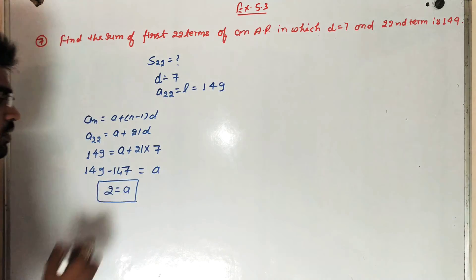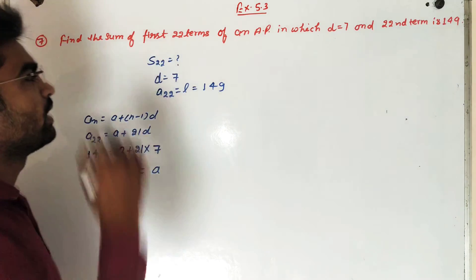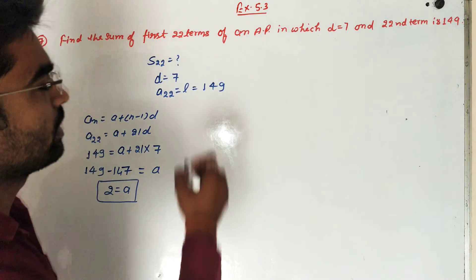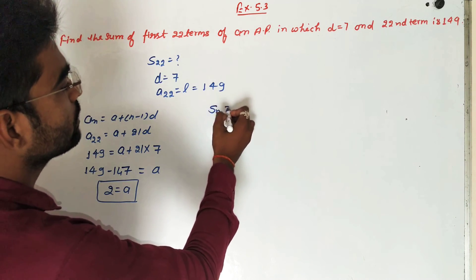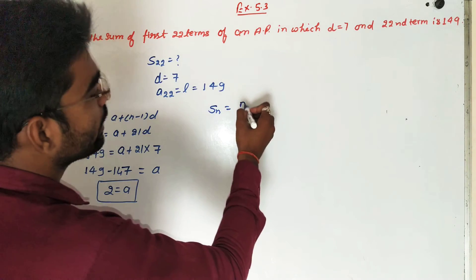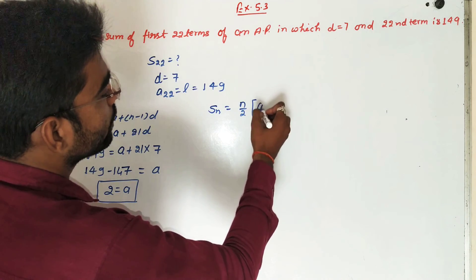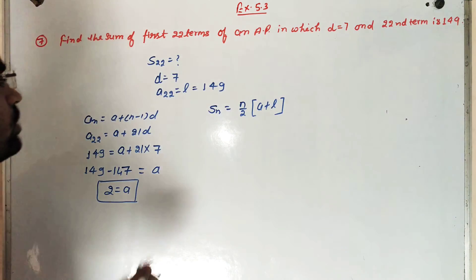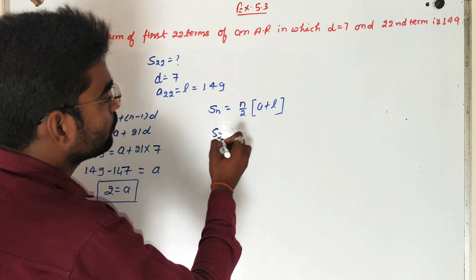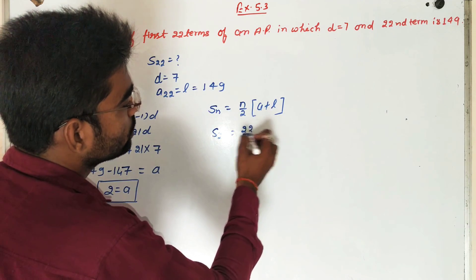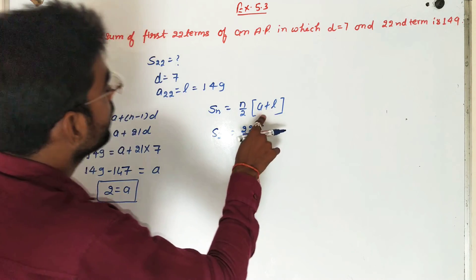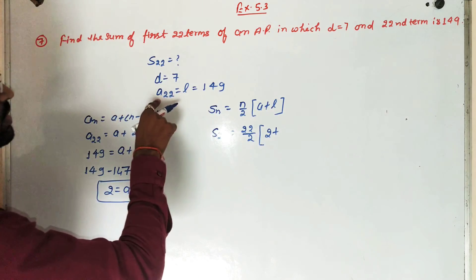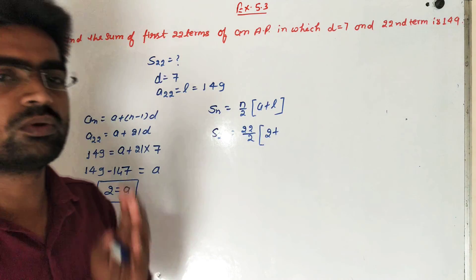Now we find sum of 22 terms. Sum of N terms is N upon 2, A plus L, where L is the last term. S22 is equal to 22 upon 2, A is 2 plus last term is 149.